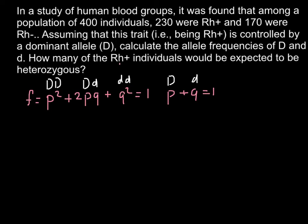Let's put this number here: 170, and the total number of people tested is 400. We have to divide 170 by 400, and we'll be able to find the frequency that is q squared.